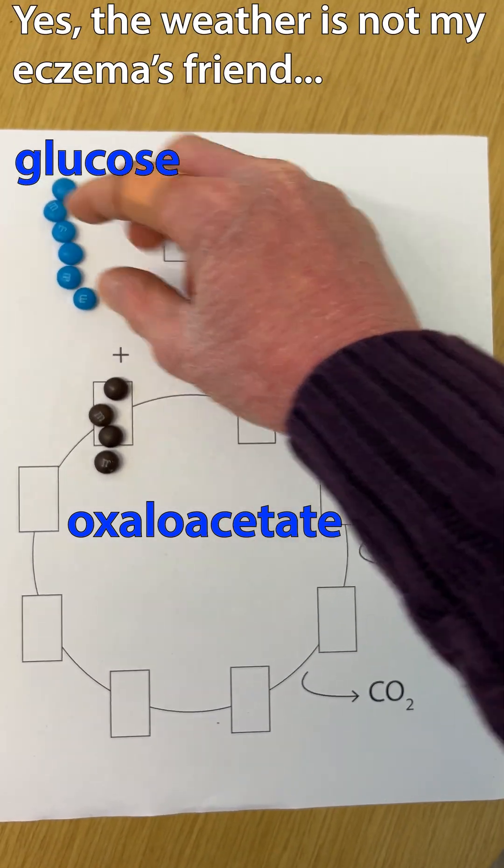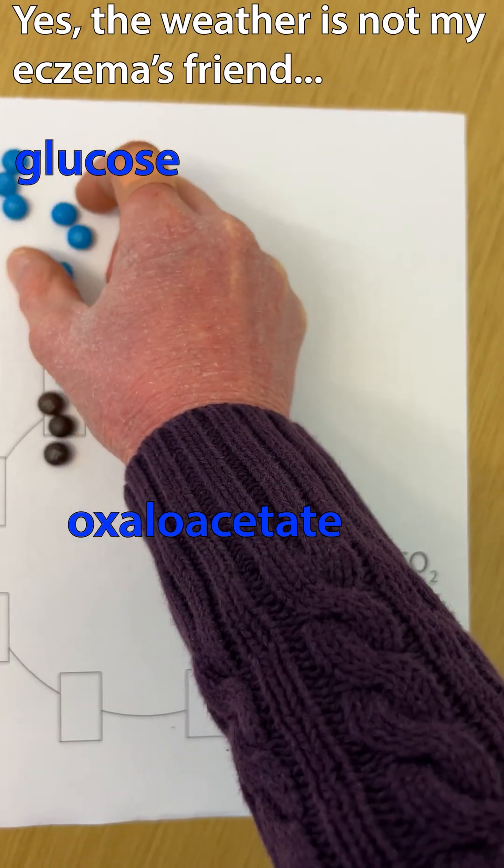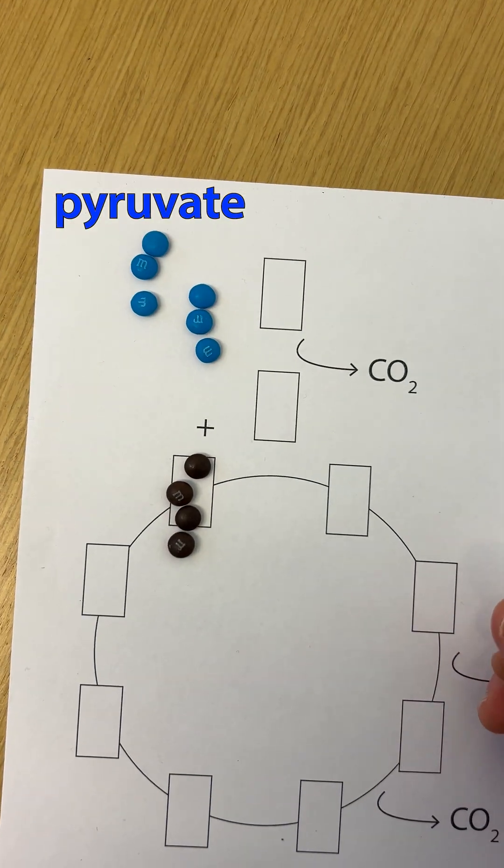Glucose is a six-carbon molecule. In the process of glycolysis, we split it in half into two three-carbon molecules, two pyruvates.